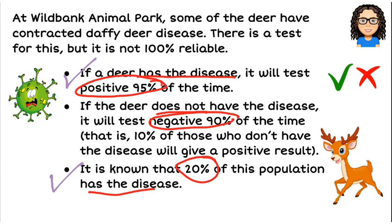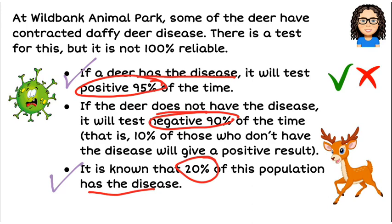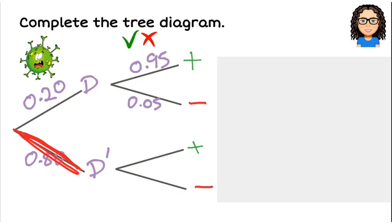Then the middle piece: if the deer does not have the disease, so going down this pathway, it will test negative 90% of the time. So there's our 90% of the time that it will be negative, which means 10% of the time it will be positive.